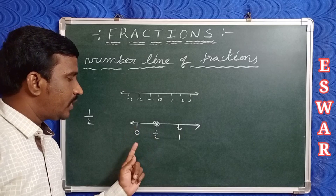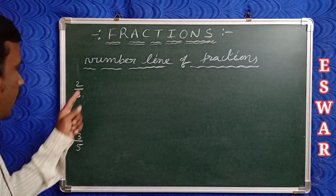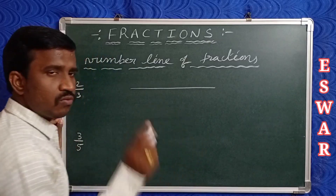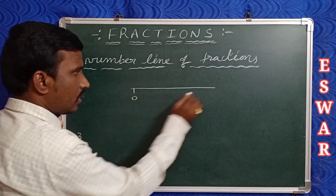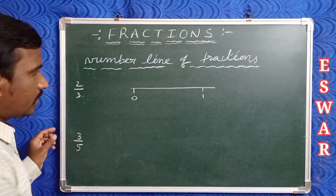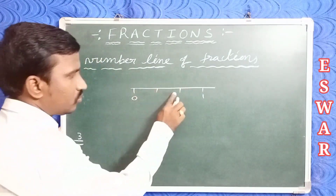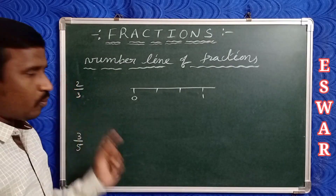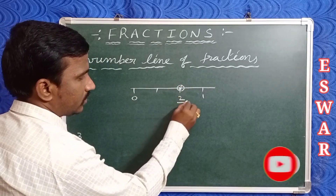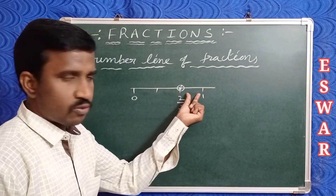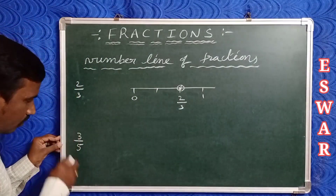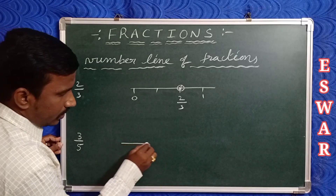Now take two more examples. Two by three also lies between 0 and 1. So mark 0 and 1, then divide 0 to 1 into three equal parts. We take only the first two parts — first part and second part. That point indicates the fraction two by three. So the segment is divided into three equal parts and we count only two parts, giving us two by three.